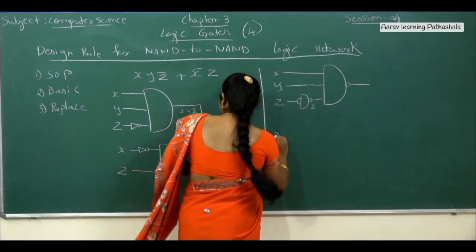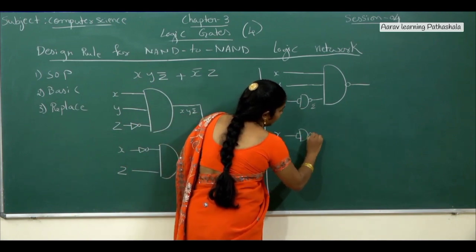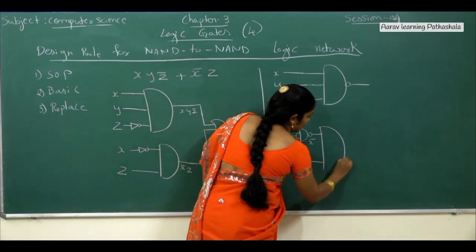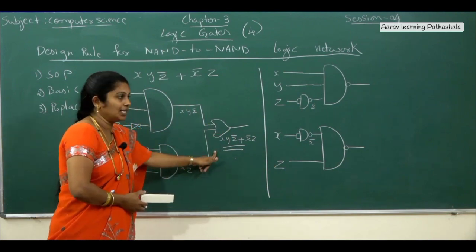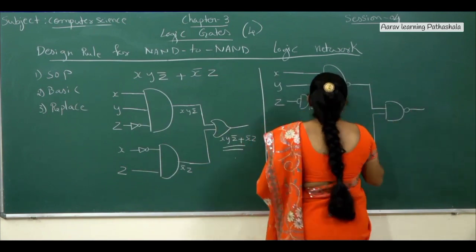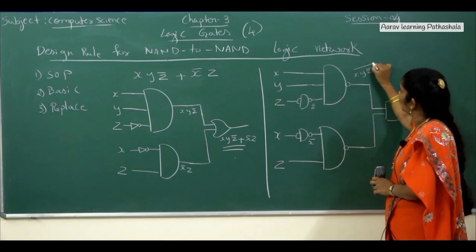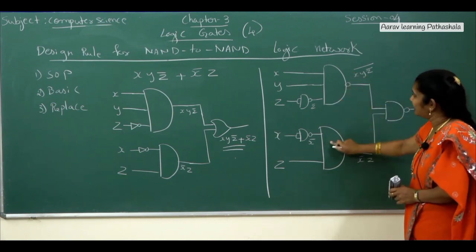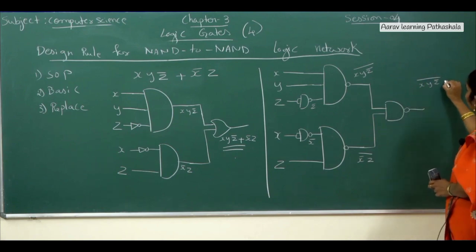For the second part, X and Z are inputs but we require X̄. Use a NAND symbol with both inputs tied to X — that gives X̄. Then connect X̄ and Z using a NAND shape with a circle and line. All these parts are combined with an OR operator — reverse C-shape — but here we need to use only NAND symbols. The outputs from the first and second NAND gates are X Y Z̄ whole bar and X̄ Z whole bar respectively.